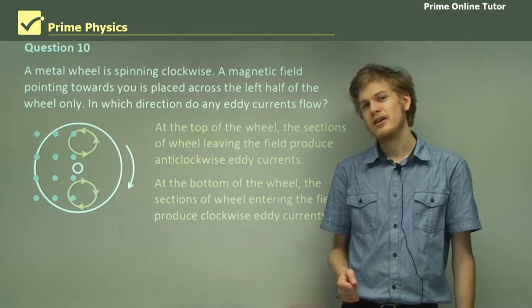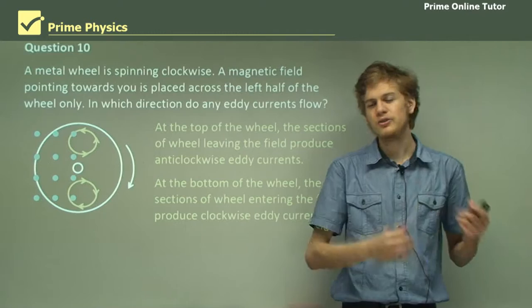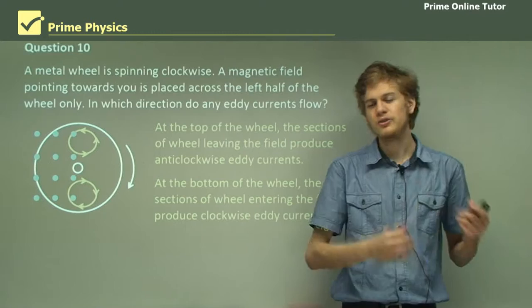That's the end of the questions and the end of the section on electromagnetic brakes, which are a way of turning kinetic energy into electrical energy and then heat energy in order to slow down a moving object. In the next section, we'll be looking at induction cooktops and other uses of eddy currents.